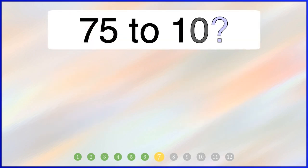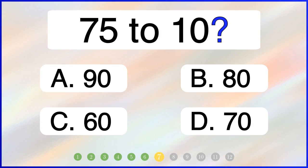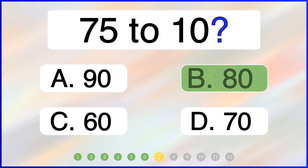What is 75 rounded to the nearest 10? The correct answer is option B: 80.